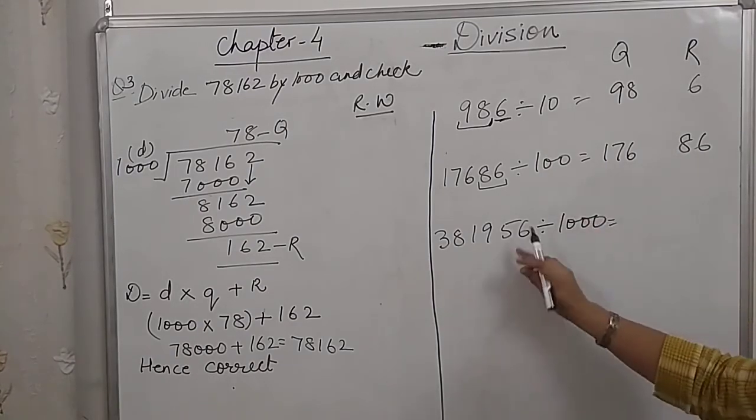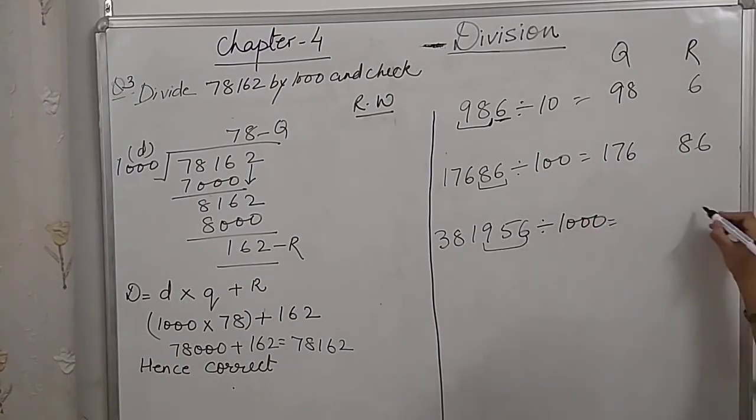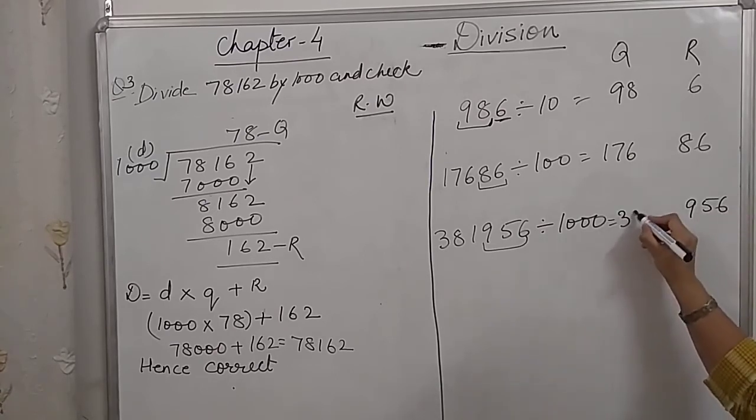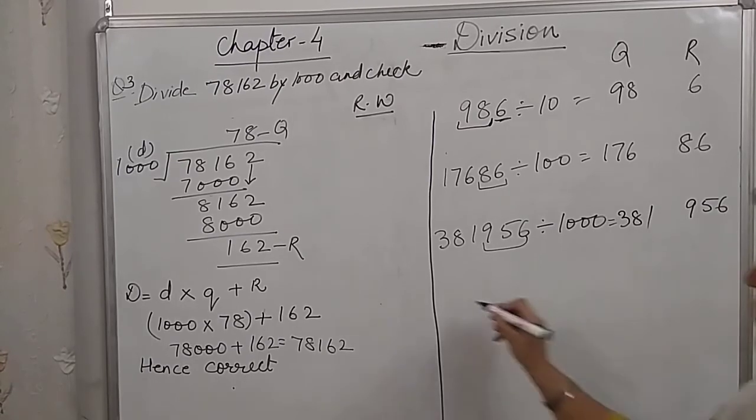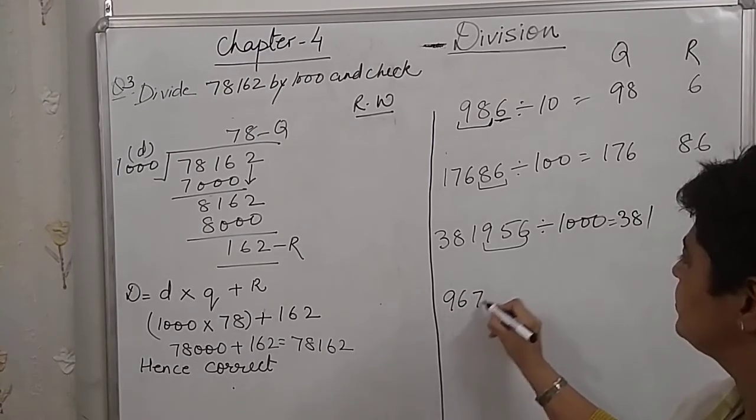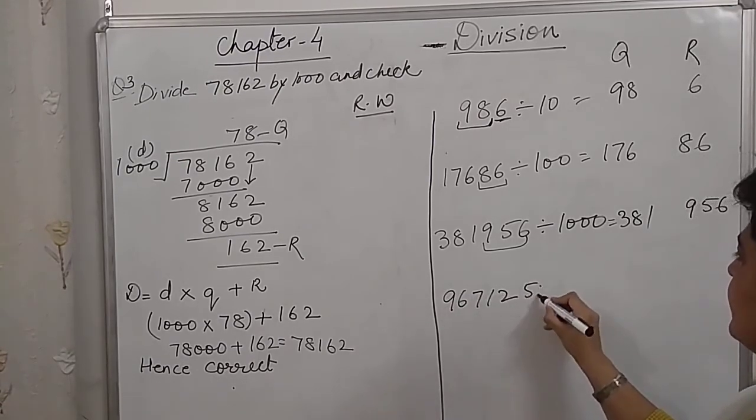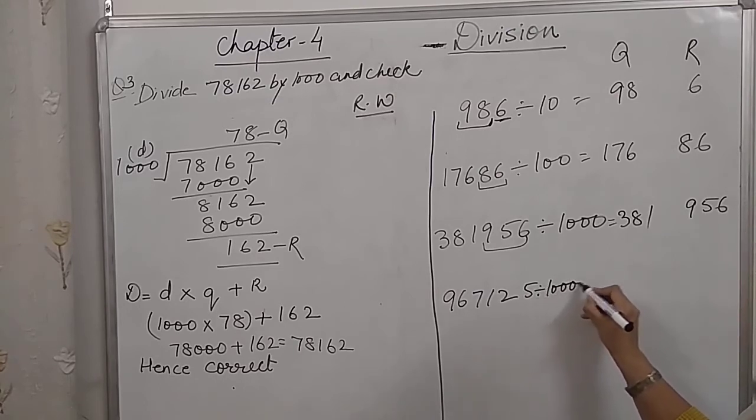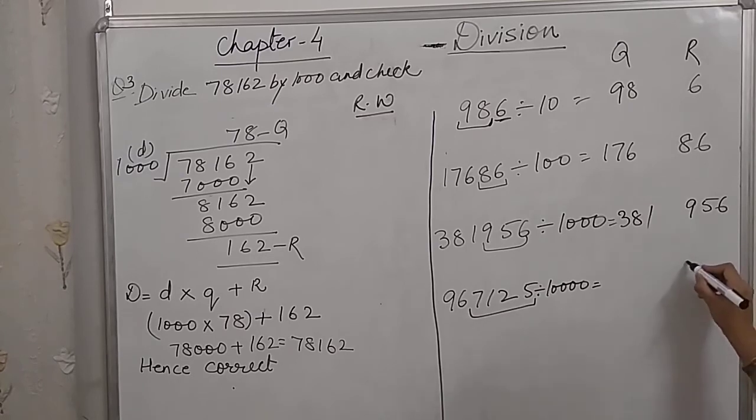Here also, same thing. So, last 3 digits will become the remainder and the remaining digits, 318, 1 will become the quotient. So, last 4 digits, 4 zeros, so last 4 digits will be the remainder and quotient will be 96.